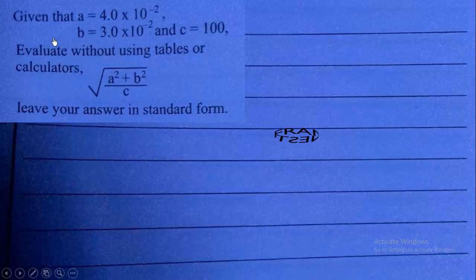So, we have this question given to us, and we want to solve it. Given that A is equal to 4.0 times 10 exponent negative 2, B is equal to 3.0 times 10 exponent negative 2, and C is equal to 100.